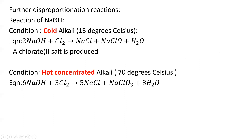Other disproportionation reactions occur when chlorine reacts with alkali (NaOH). At cold conditions (~15°C), NaOH reacts with Cl₂ to produce NaCl and NaClO (chlorate(I) salt) and water — two NaOH are required since oxidation state changes by 2. At hot concentrated alkali (~70°C), 6 NaOH reacts with 3 Cl₂ to produce 5 NaCl, 1 NaClO₃, and 3 water molecules — chlorine is at +5 in NaClO₃ and −1 in NaCl, so the ratio is 5 NaCl to 1 NaClO₃.